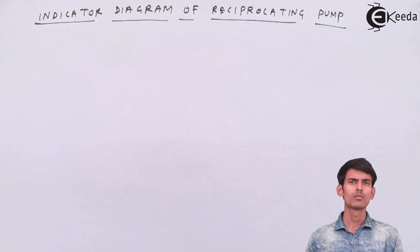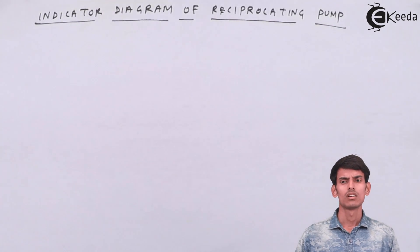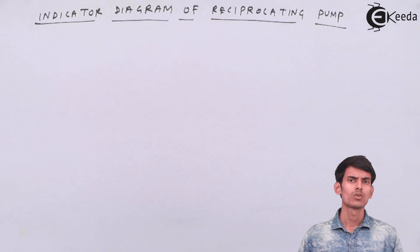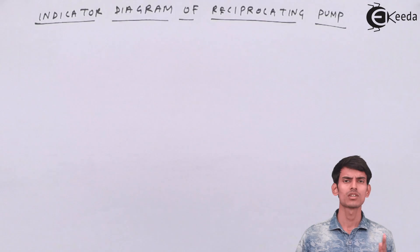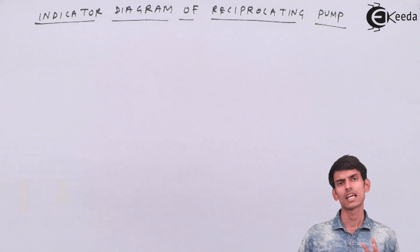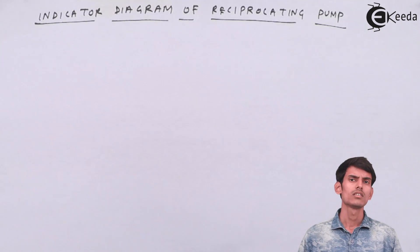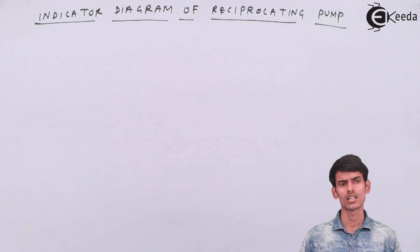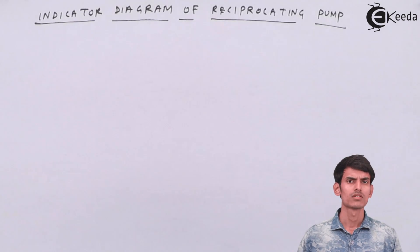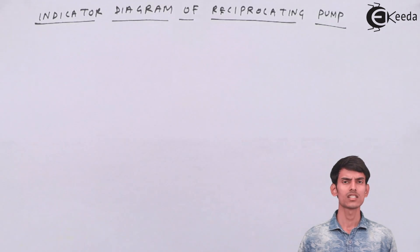An indicator diagram is nothing but a graphical representation of pressure versus the stroke, or you can say the crank angle. As the piston moves, the pressure changes along the length of the cylinder. We'll be plotting the change of pressure as the crank moves — at different crank angles we'll see what the pressure is at different strokes. Pressure is plotted along the vertical y-axis and the crank angle theta is on the x-axis.